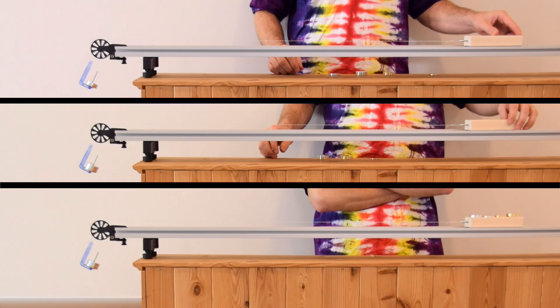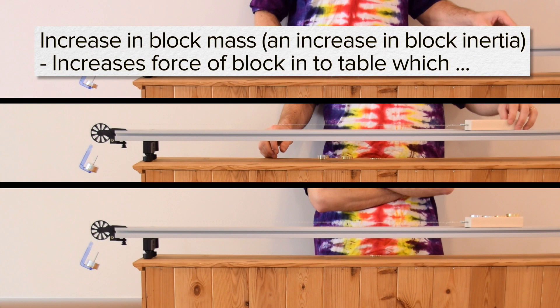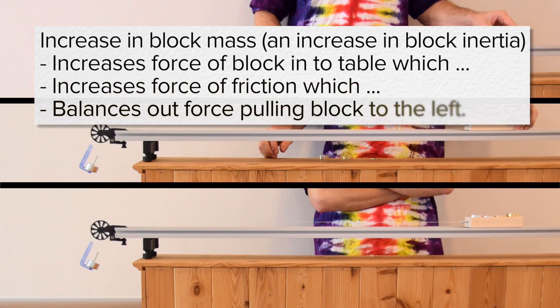I'm sorry, Billy, that's not correct. When we get the block to not accelerate, it is being pressed into the table hard enough that the force of friction is strong enough to balance out the force pulling it to the left. The challenge is that when we increase the inertia of the block by increasing its mass, we also increase how much force is pressing the block against the table.